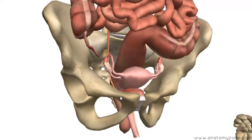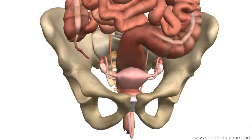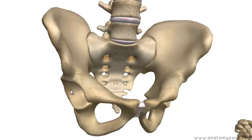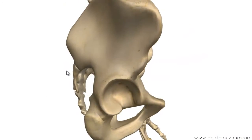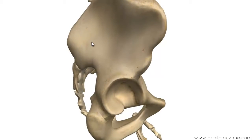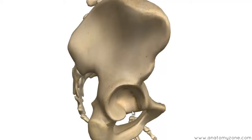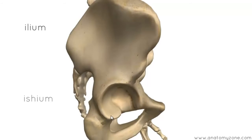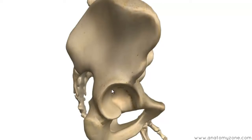I'll do a separate tutorial on the pelvic cavity covering the inlet, outlet, walls, and floor. But in this tutorial I'll talk through the features of the pelvic bones. The hip bone — the os coxae — has three parts. At birth, there are three bones joined by cartilaginous joints at the acetabular fossa — where the head of the femur articulates with the hip. You've got the ilium superiorly, the ischium postero-inferiorly, and the pubis antero-inferiorly. They're joined by cartilaginous joints and fused in the adult, making it one large bone.